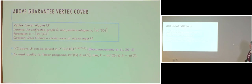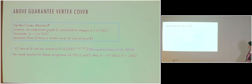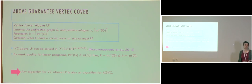Vertex cover above LP can be solved in FPT time — this is from a paper by Saket and co-authors. By weak duality of linear programs, the optimum LP solution is lower bounded by the maximum matching size. Therefore K minus the optimum LP value is upper bounded by K minus the maximum matching size, which implies that any algorithm for vertex cover above LP is also an algorithm for above-guarantee vertex cover.